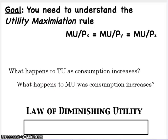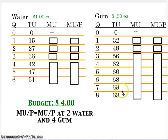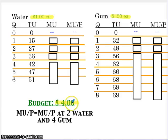So let's take a look at how we measure this. We're going to look at two products: water and gum. Water costs a dollar a bottle, gum costs 50 cents a pack, and our budget is $4. So we've got two prices and a budget — those are all the items we need to keep in mind.